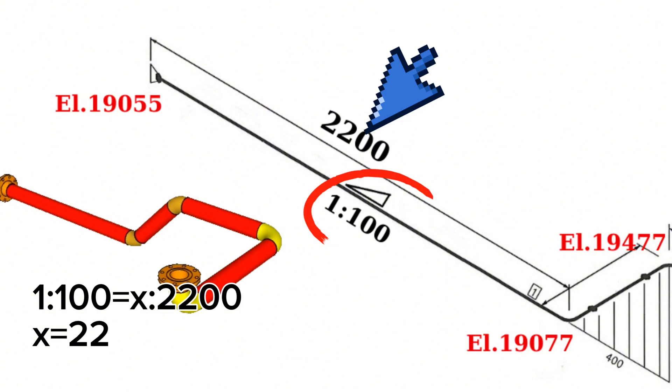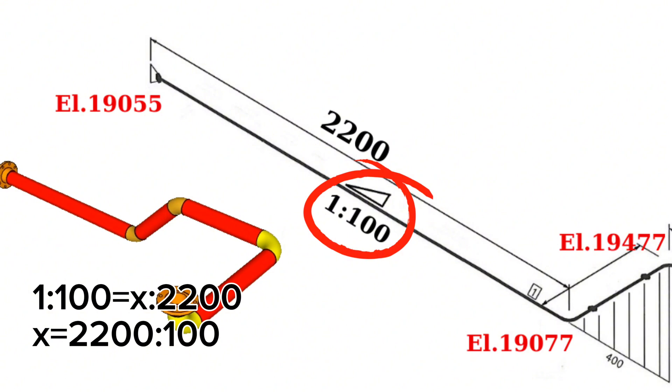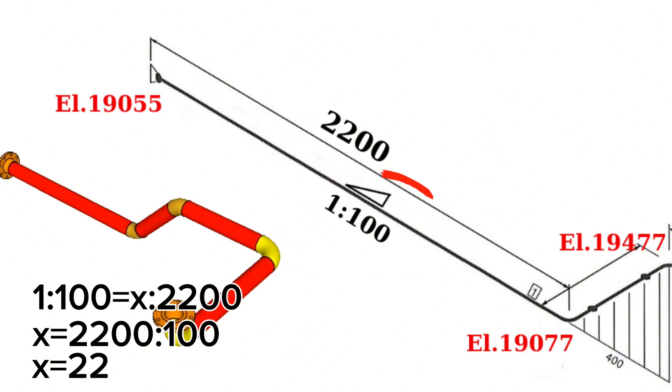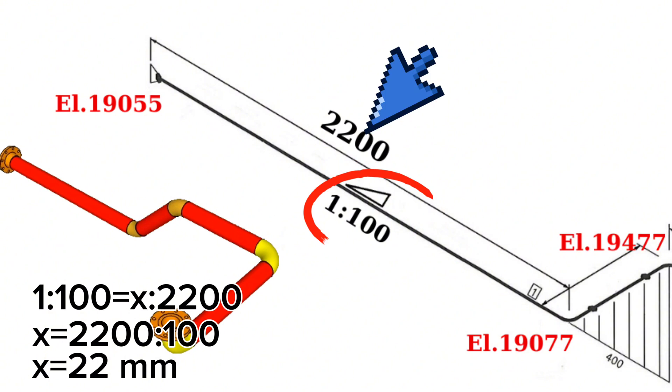Here x equals 2200 to 100 ratio. Continue the calculation and found x equals 22 millimeters. When you want to calculate a slope, you can use both methods on the piping drawing.